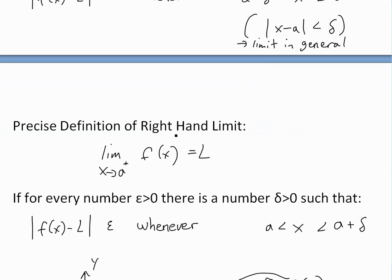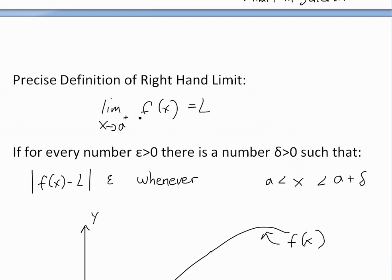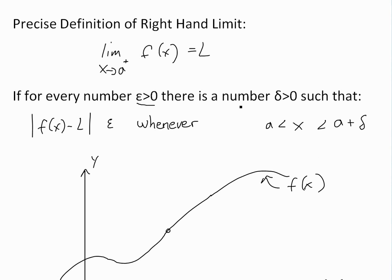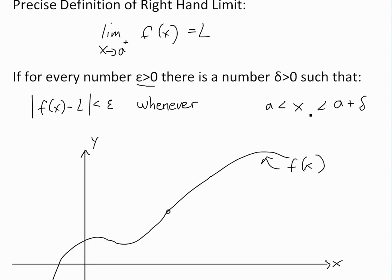The same idea applies for the right-hand limit: the limit as x approaches a from the right (positive side) of f of x equals L, if for every number epsilon greater than zero, there is a number delta greater than zero, such that the absolute value of f of x minus L is less than epsilon, whenever a is less than x and x is less than a plus delta — that is, on the right side of a.